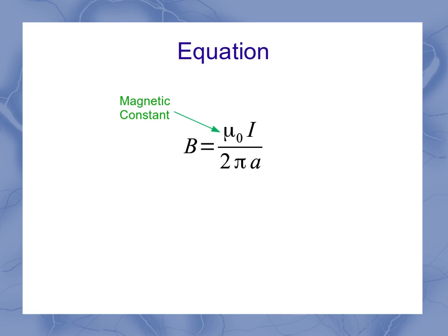So in this equation, again, our mu nought is our magnetic constant, the permeability of free space. I is our current.